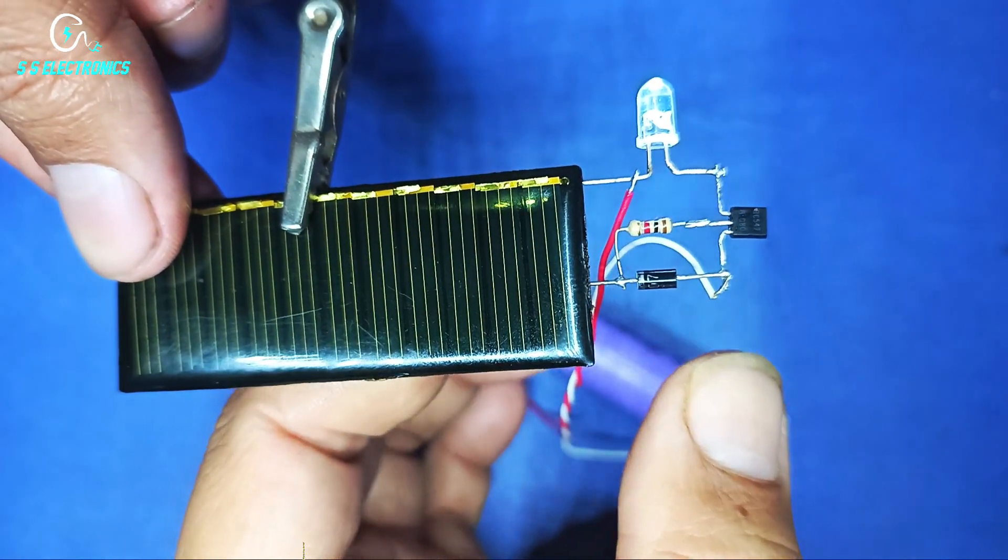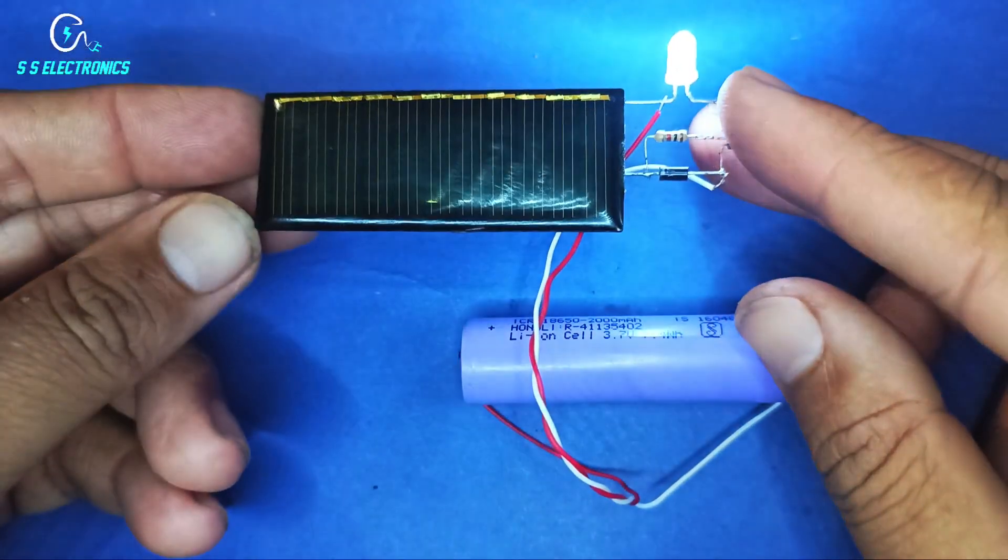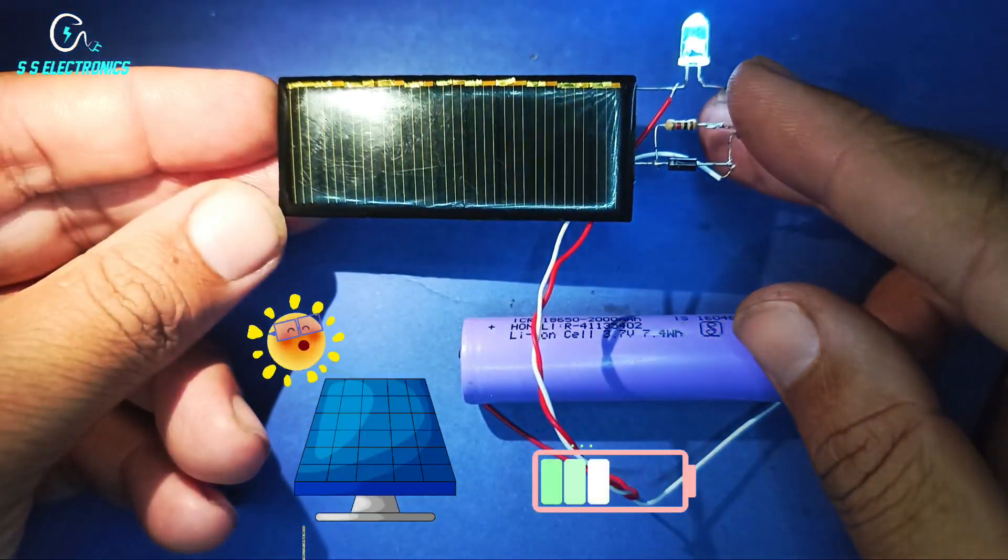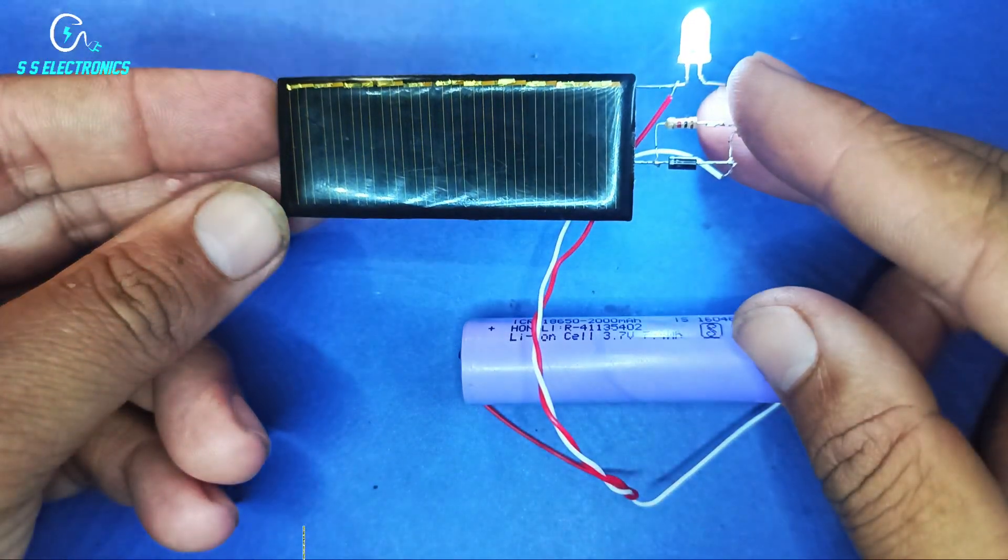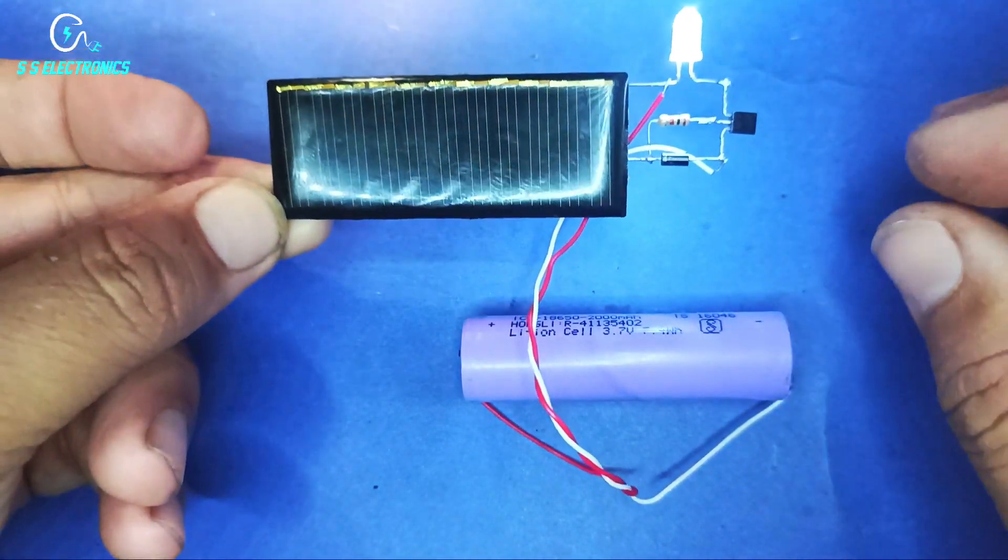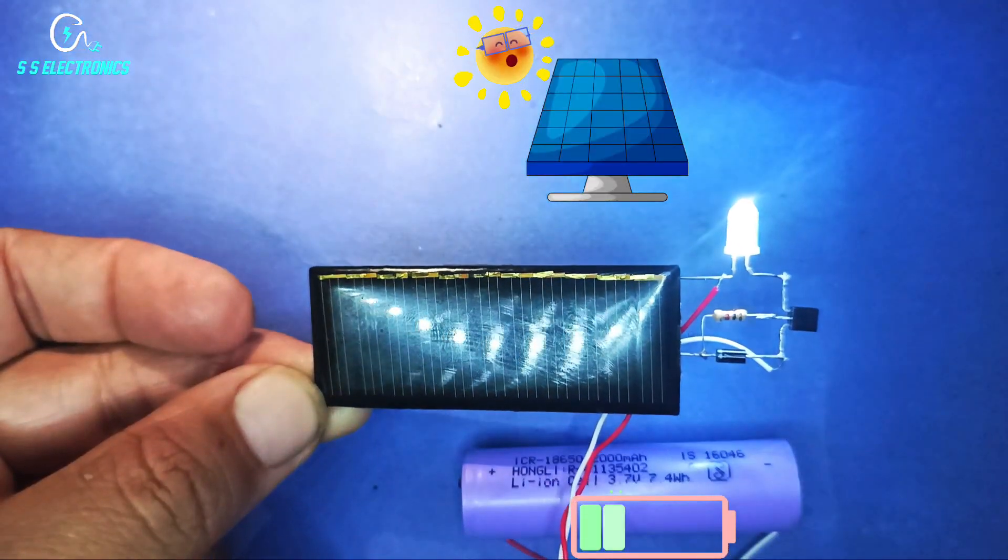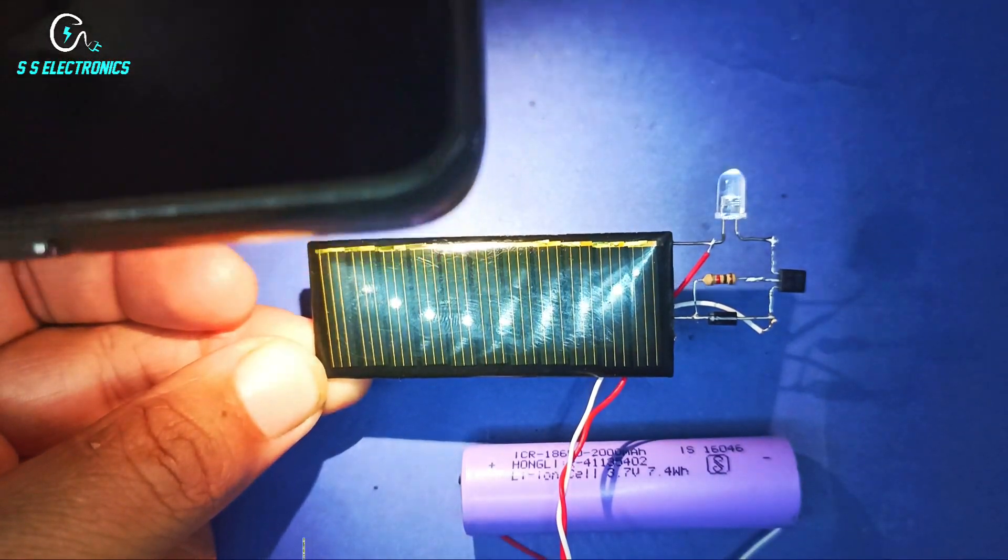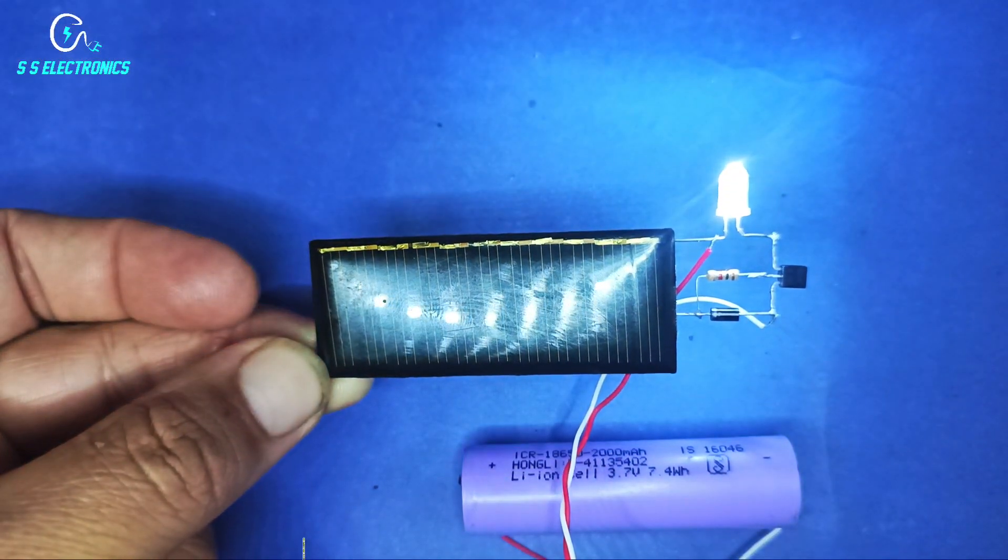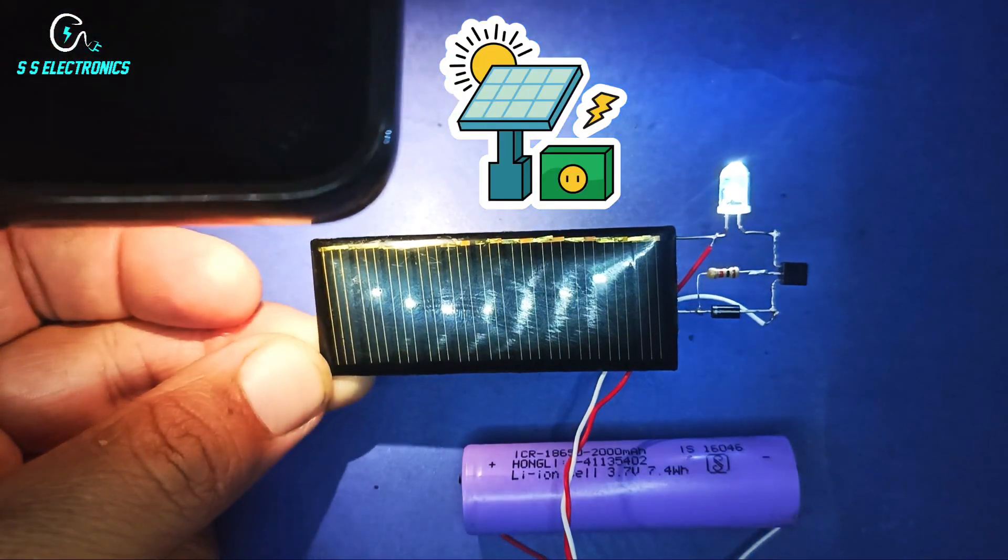Now our circuit is ready, let's test it. When sunlight hits the solar panel, LED light automatically turns off and battery charging starts. When sunlight is away, LED light automatically brightens.